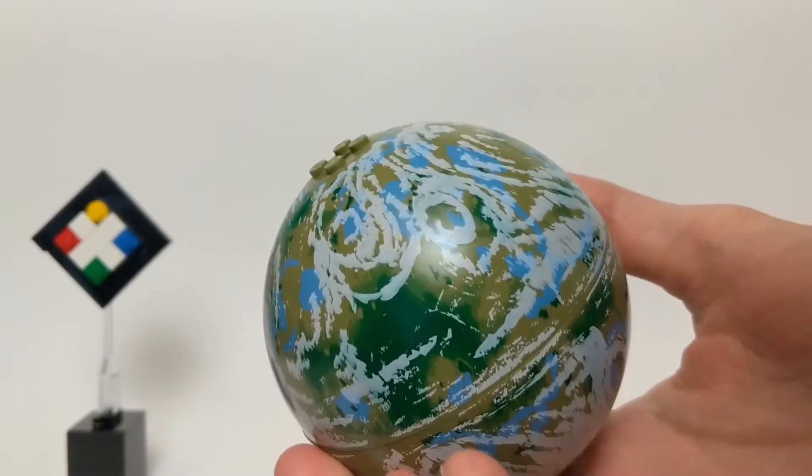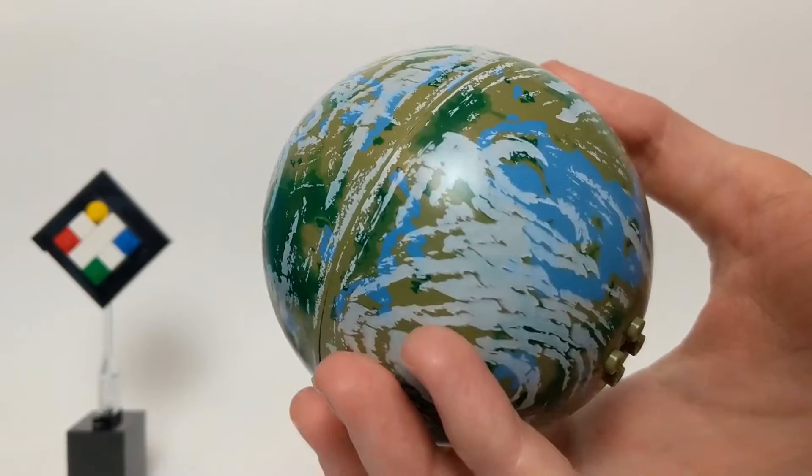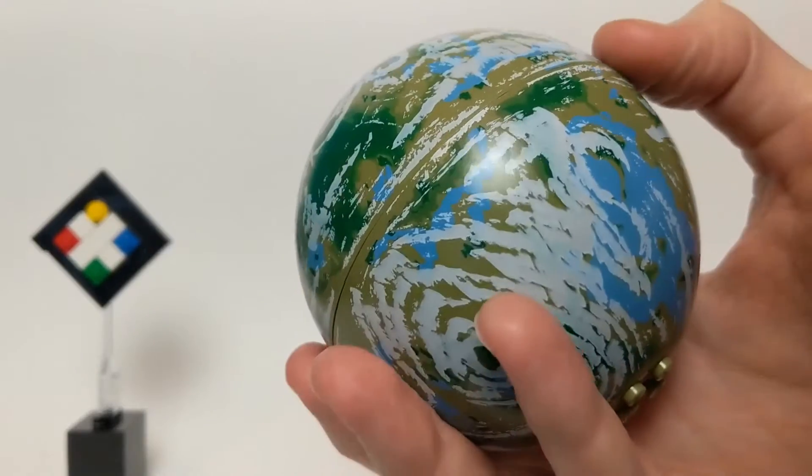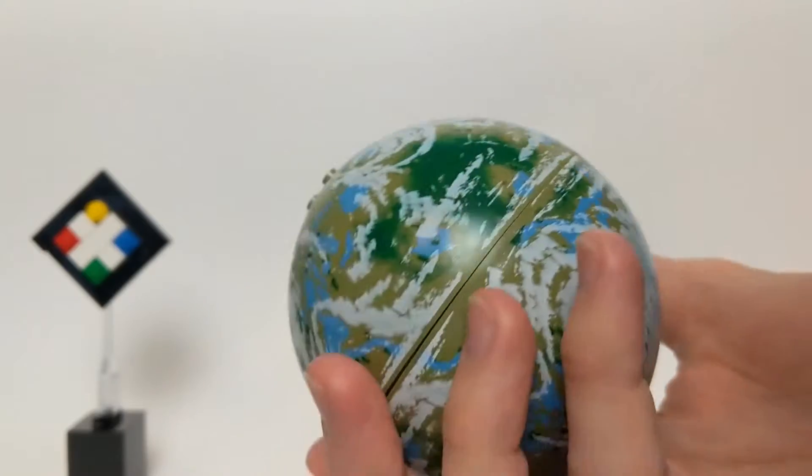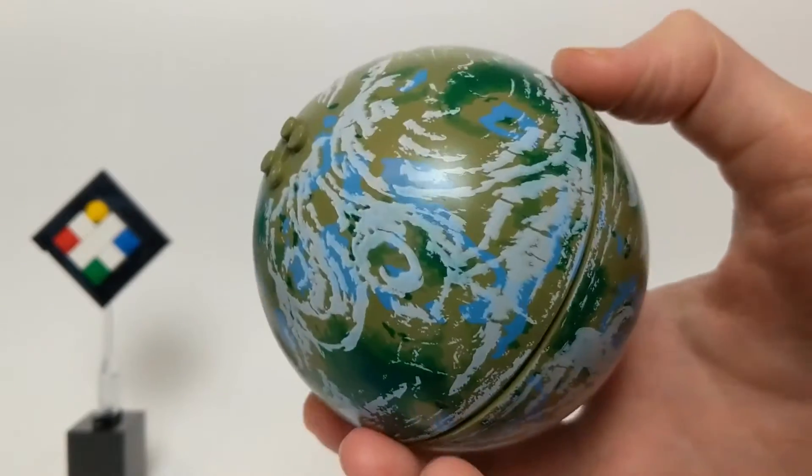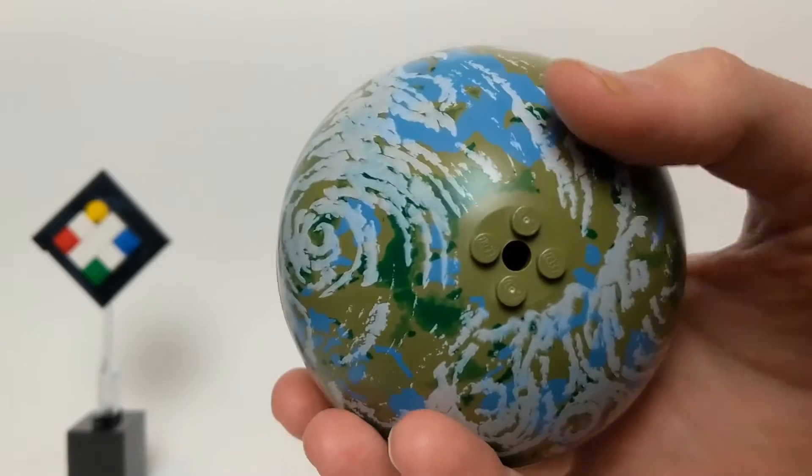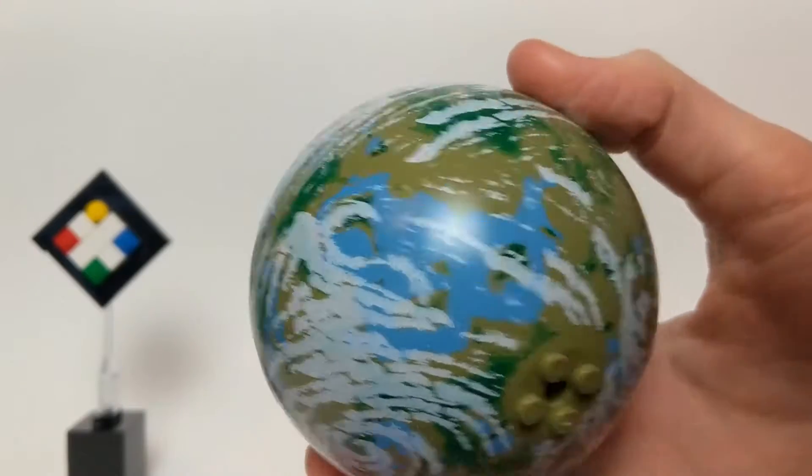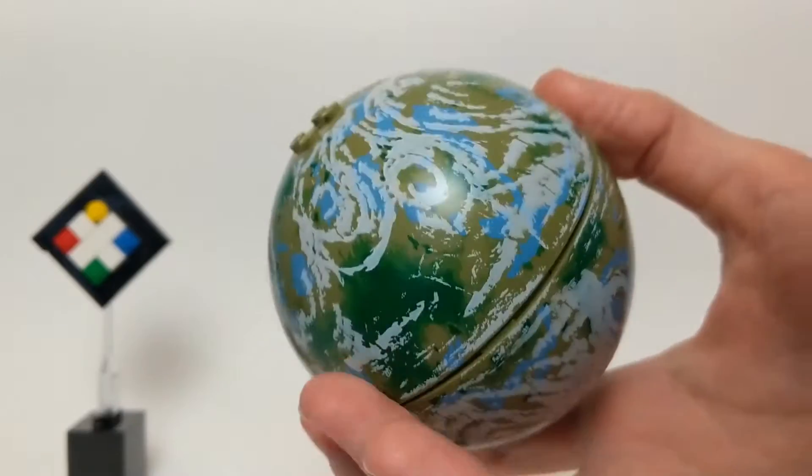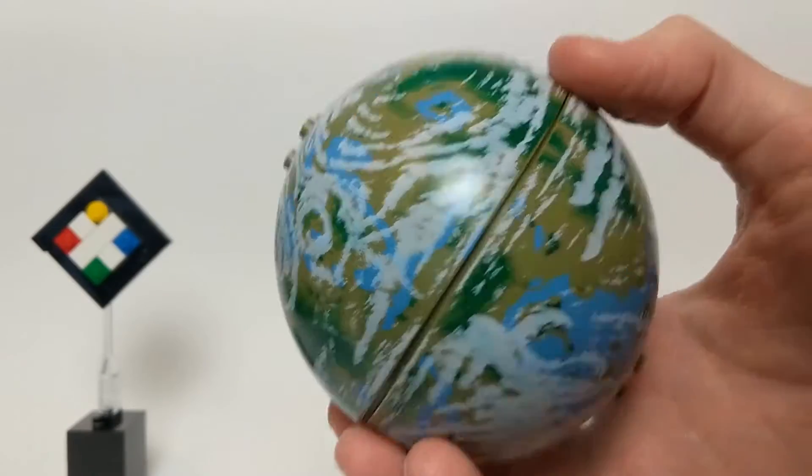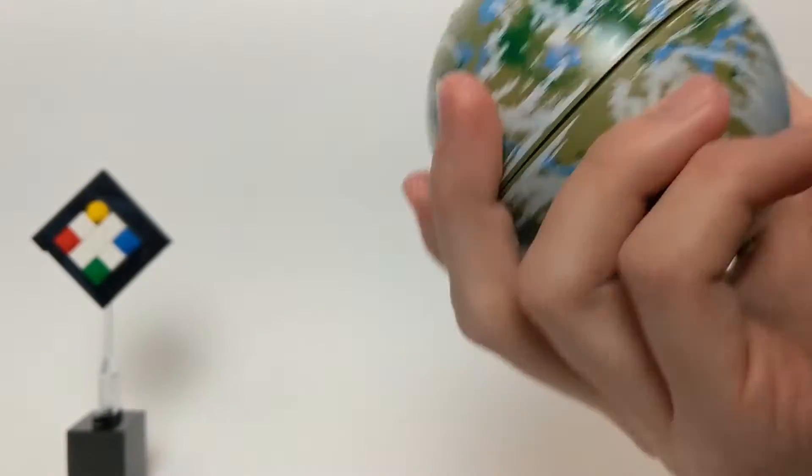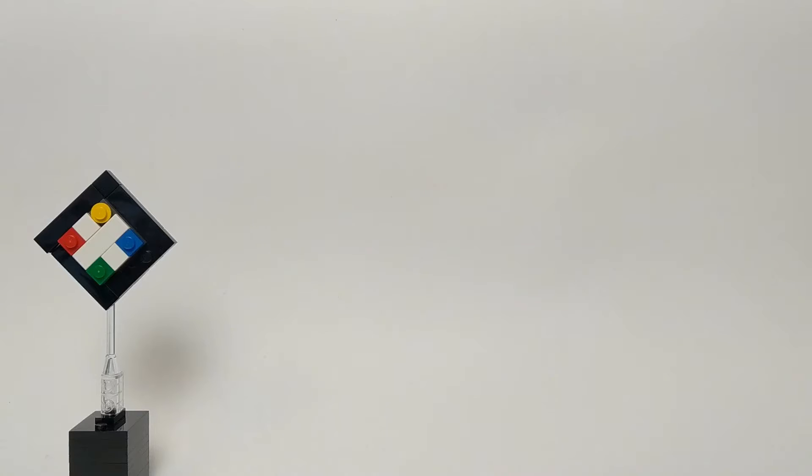A LEGO creation will oftentimes have more of a geodesic shape, some kind of dodecahedron, or a multiple of sides that is large enough to create a rounded shape, but not technically a sphere. On that note, however, let's take a look at some rounded elements that are particularly useful in creating LEGO spheres.